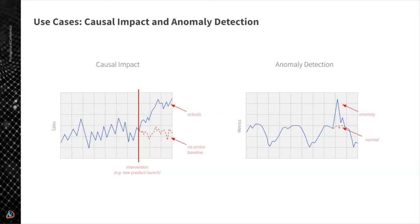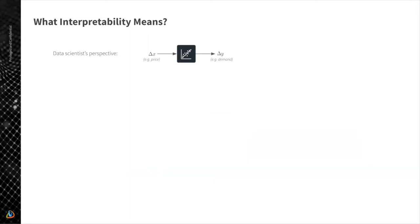Now let's talk about what interpretability actually means for different business users. Using the demand decomposition and price optimization use case as an example: from the data scientist perspective, interpretability typically means having a model that allows tracing the dependency between changes in individual features and outputs, or using techniques like SHAP values to estimate the same dependency for black-box models.